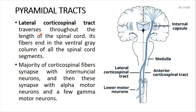The lateral corticospinal tract traverses throughout the entire length of the spinal cord and is present in all segments. Its fibers end in the ventral gray column of all spinal cord segments. The majority of the corticospinal fibers synapse with internuncial neurons, which then synapse with alpha motor neurons and a few gamma motor neurons.